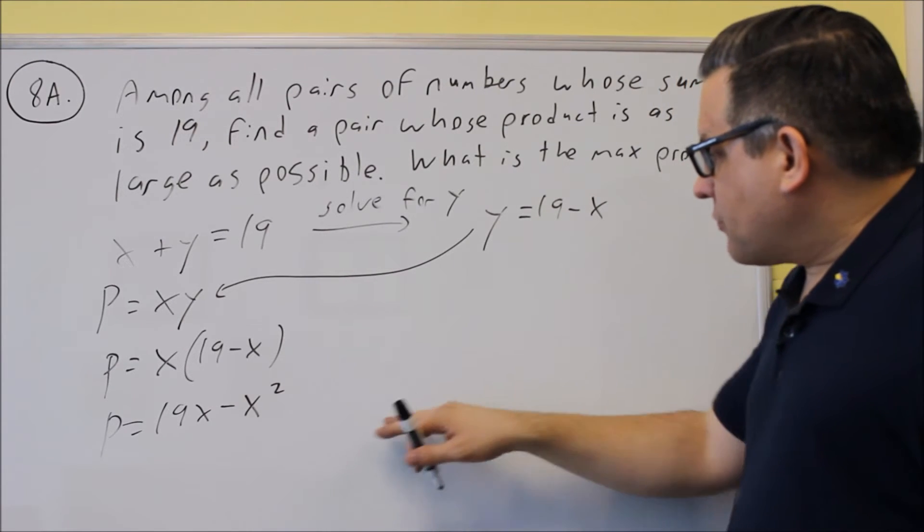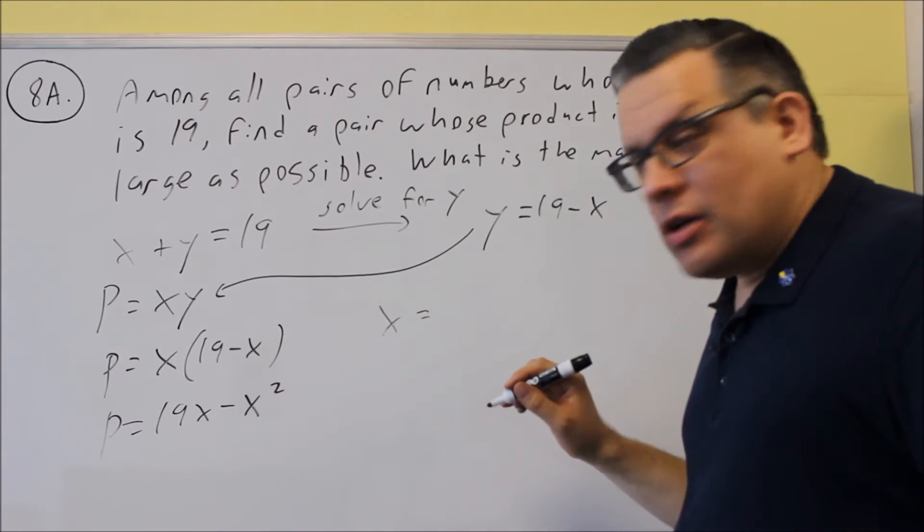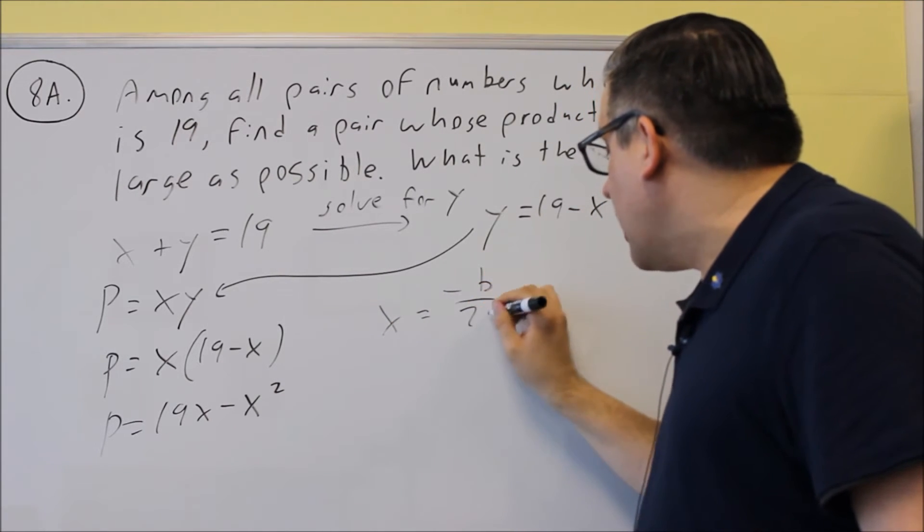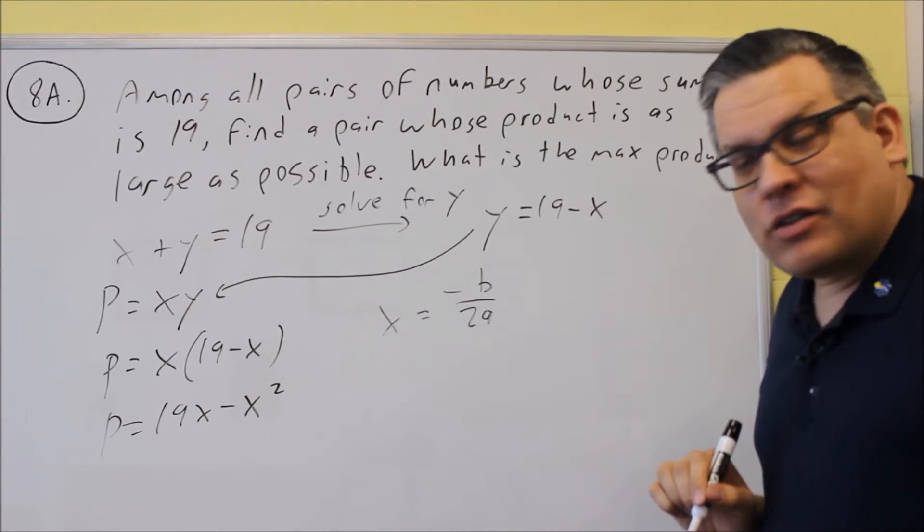Alright, so let's find x. X is equal to, again, the formula is negative b over 2a we're going to use on this one. So again, this formula is very important. It's used a lot on this test.